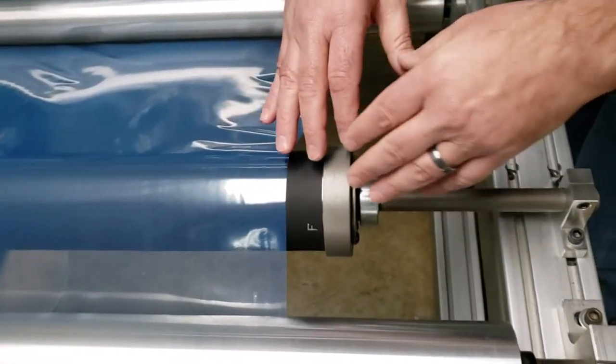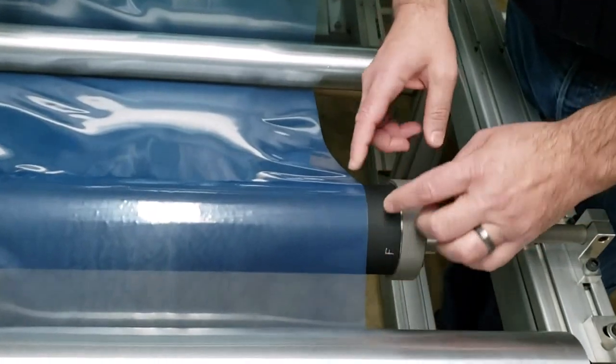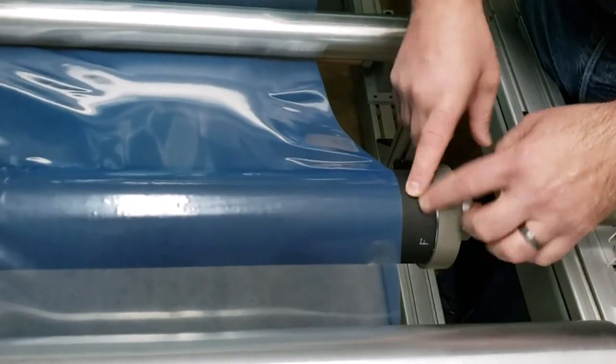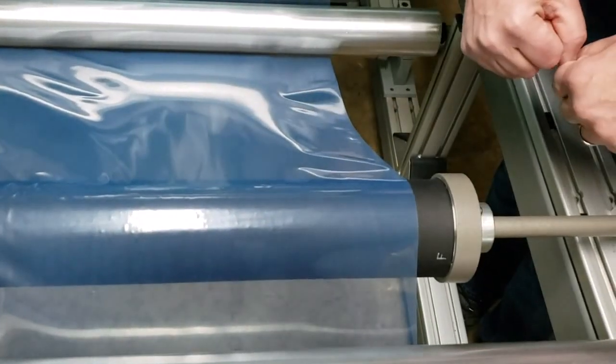The way this roll works is as the roll is rotating this rubber sleeve stretches for 180 degrees. The material laying on top of that rubber sleeve stretches with the sleeve and that's what pulls the wrinkles out of the material.